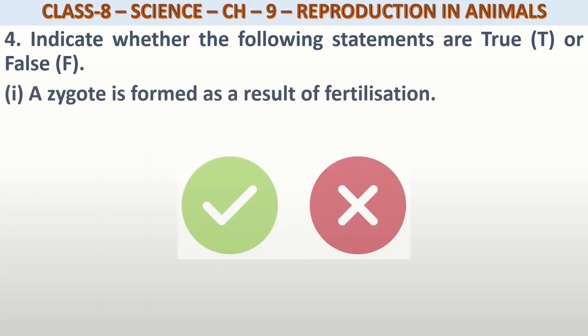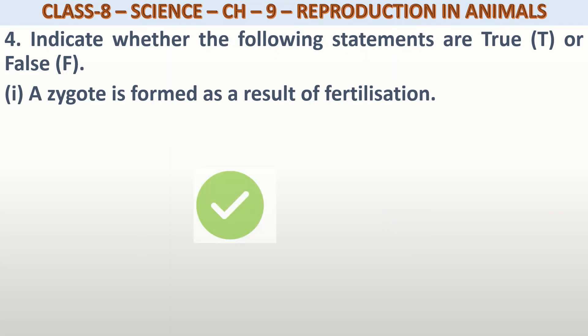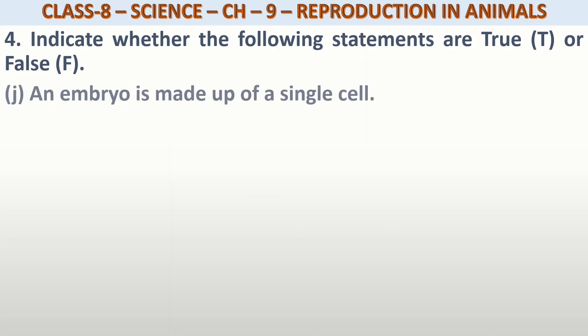A zygote is formed as a result of fertilization. Fertilization जब होता है, तो zygote बनता है? Yes, that is true. Fertilized egg is also called a zygote.